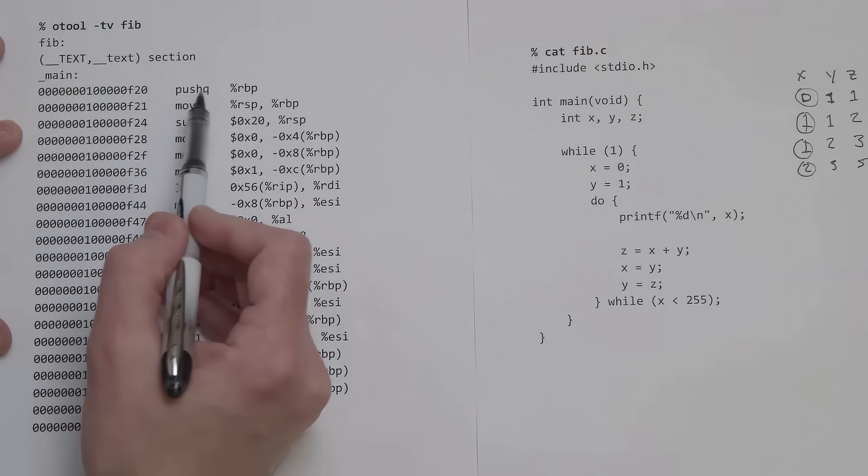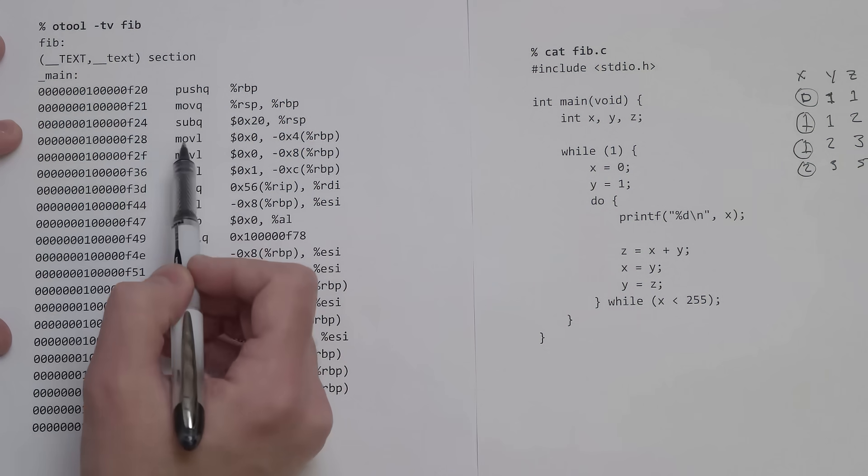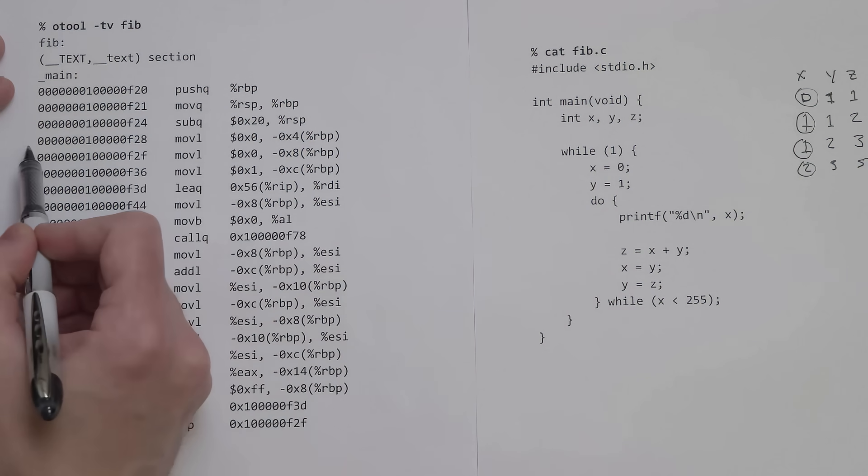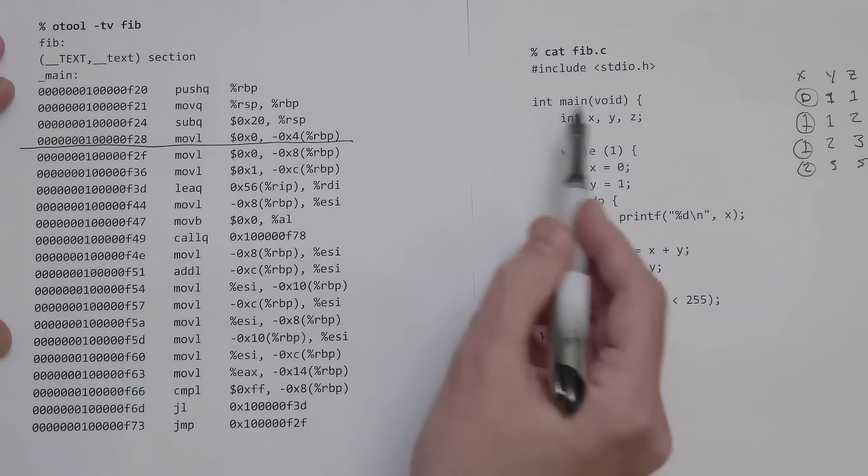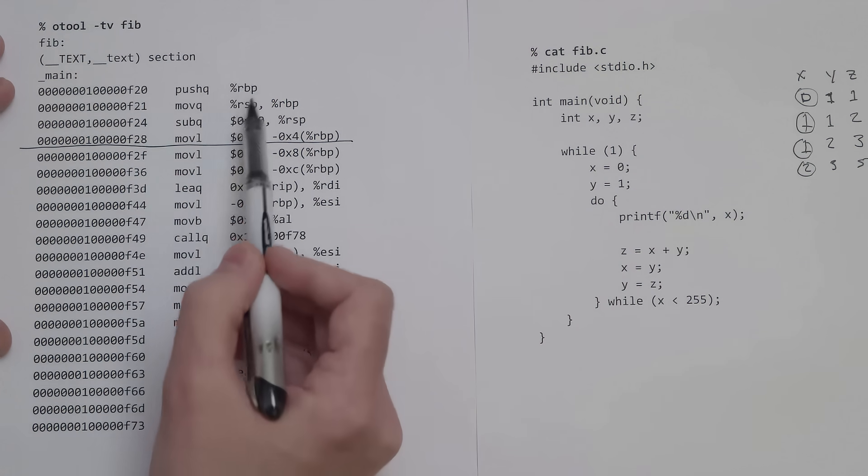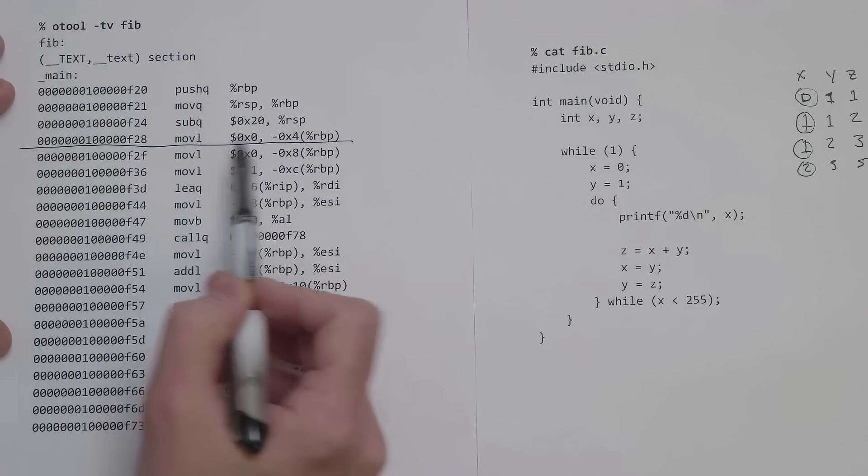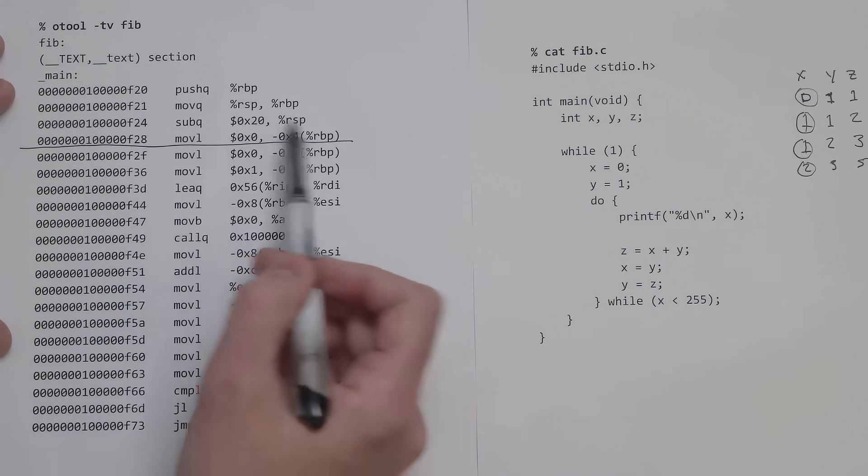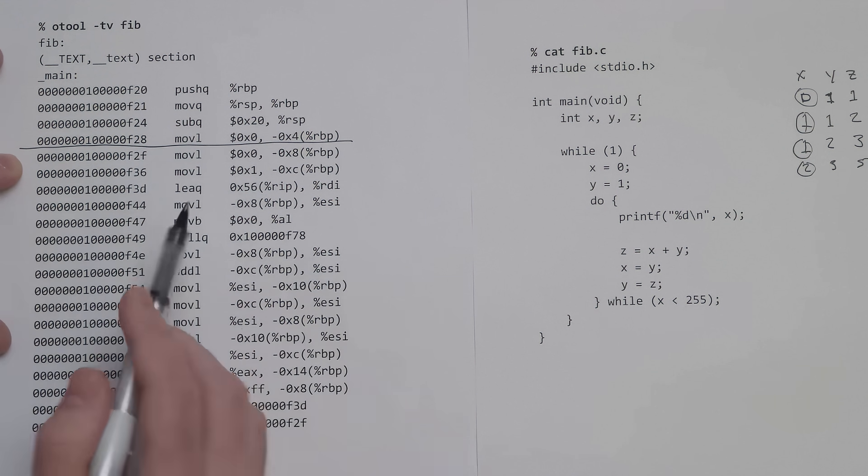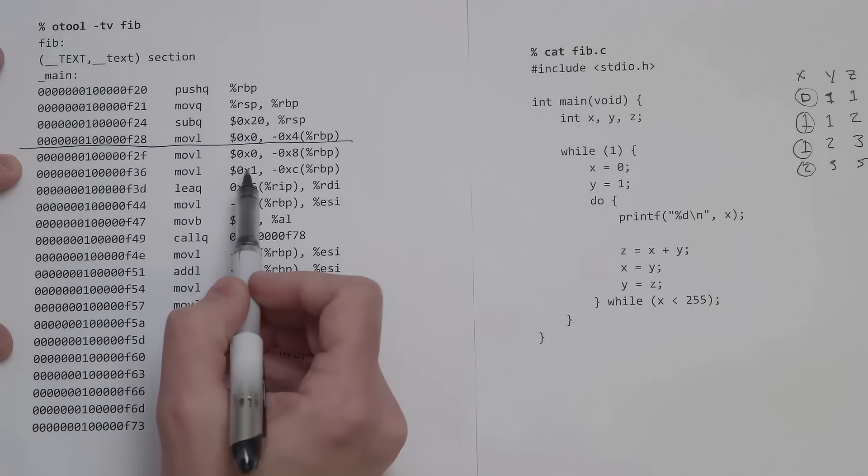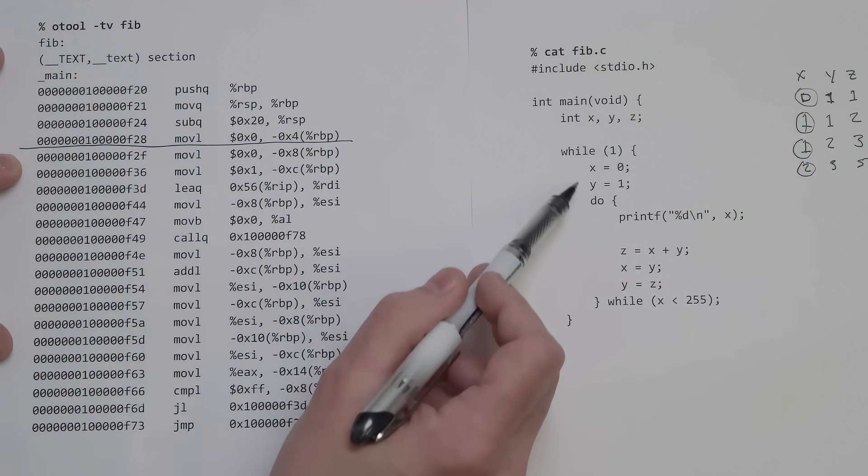I want to walk through these instructions to see if we can figure out which of these correlate to what's going on in the original C program. If we start here, the first couple things are just setting things up. Everything up here isn't really part of what I wrote, it's just setting up the stack frame.